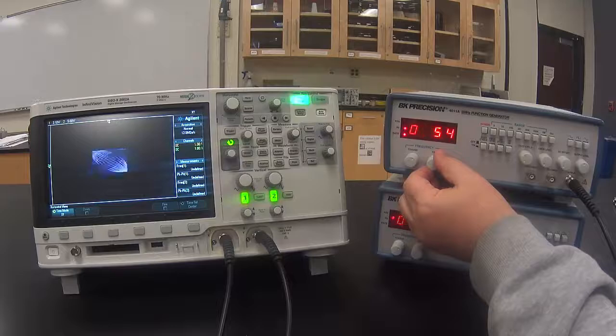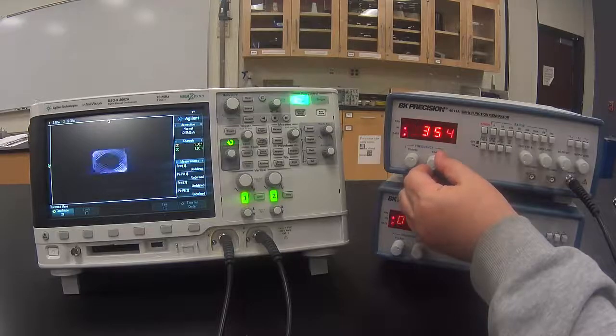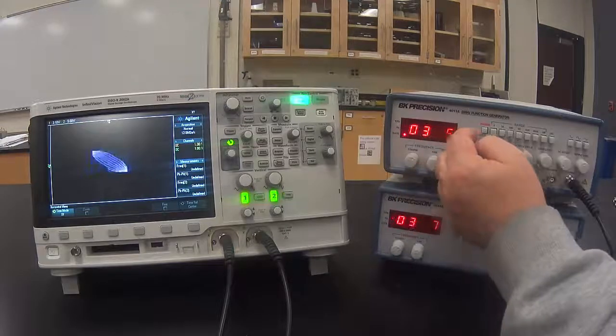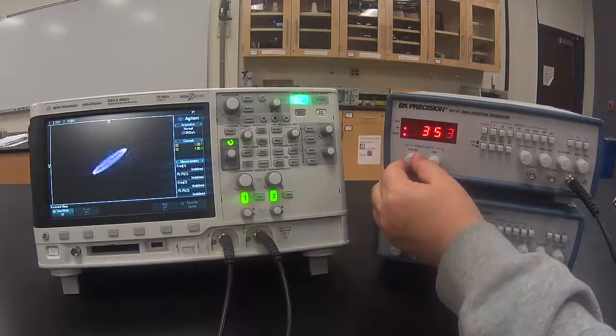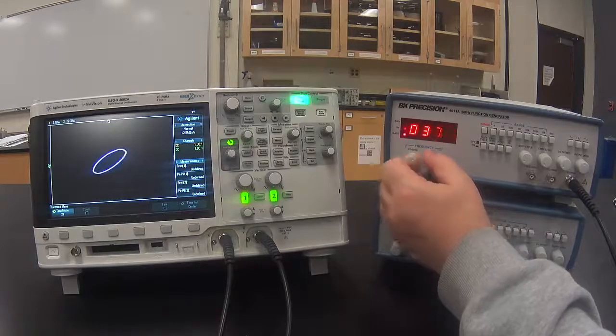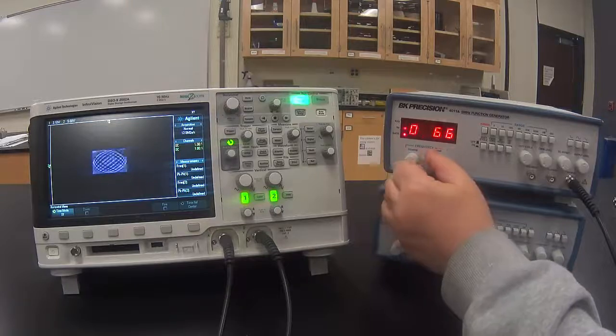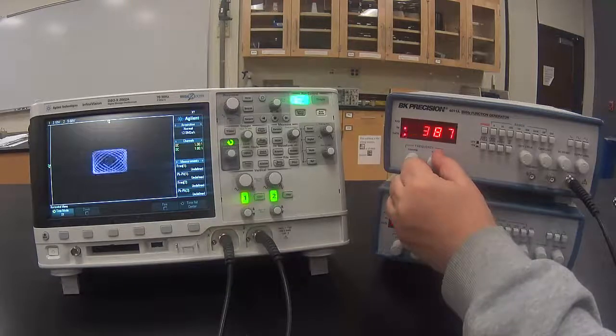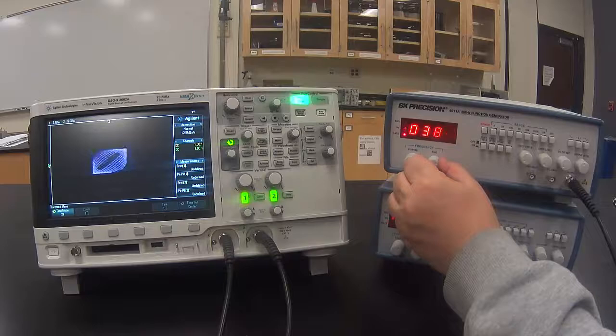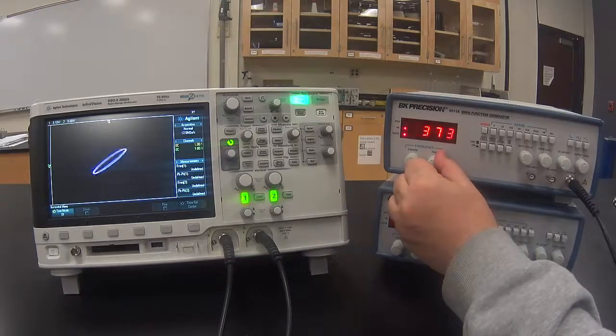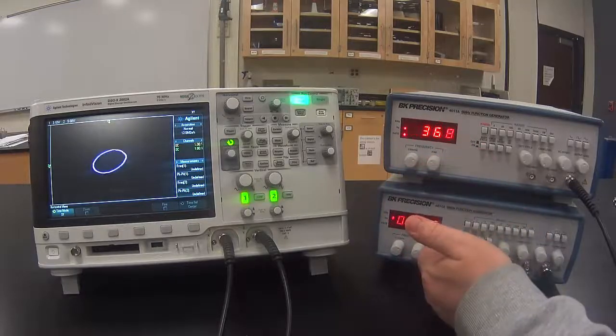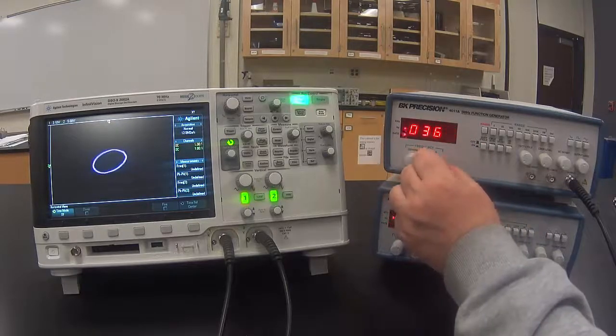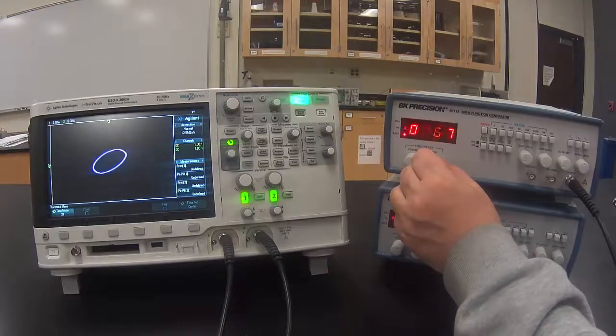Adjust one of the function generators, trying to get the frequency of that function generator the same as the other function generator. Eventually you will get an interesting figure. You will get an oval or a circle in this case.